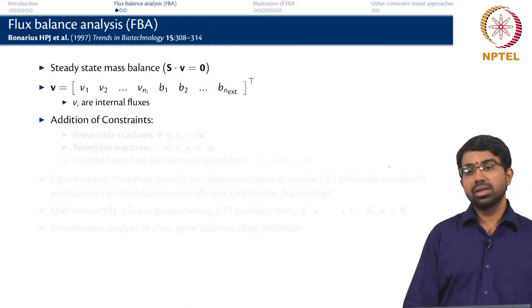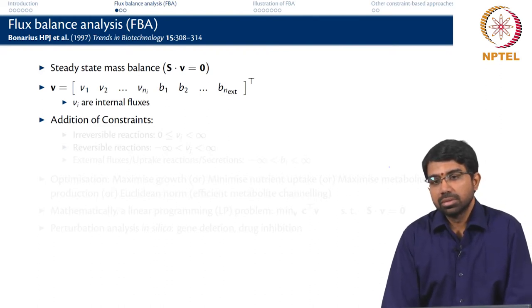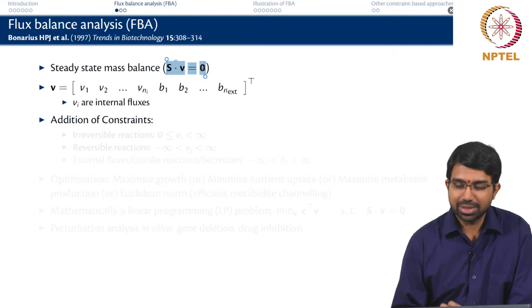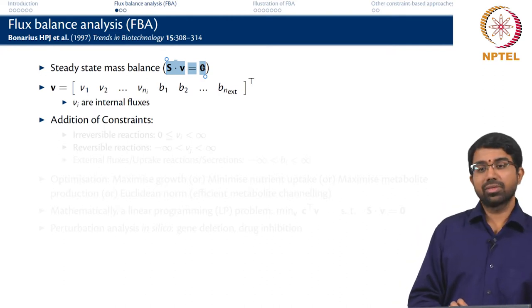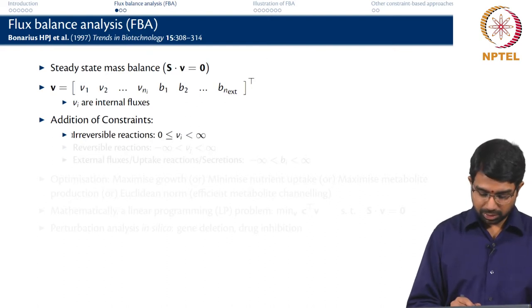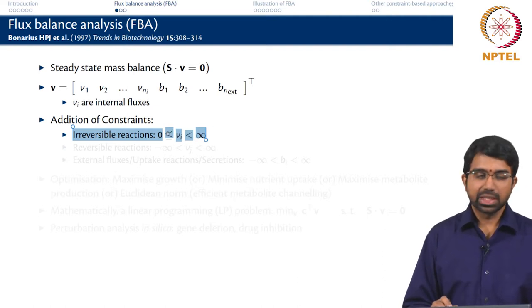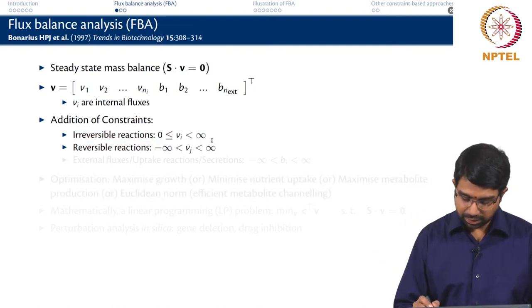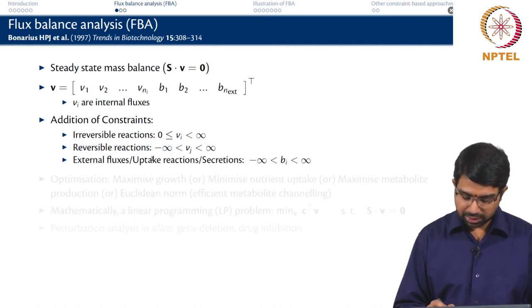And then we go ahead and add constraints. What kind of constraints can we add? Stoichiometry is accounted for, this is your stoichiometric constraint. You can add constraints on reversibility, irreversibility. There are irreversible reactions which you will say can go only in one direction. So you can say 0 less than V less than infinity, in practice not infinity but a large number. And you have reversible reactions which can go in either direction and you can have exchange fluxes or uptakes that can either be reversible or irreversible.